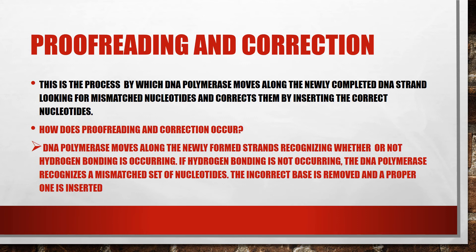The last process of DNA replication is proofreading and correction. This is the process by which DNA polymerase moves along the newly completed DNA strands, looking for mismatched nucleotides and correcting them by inserting the correct nucleotides. For example, if a nucleotide such as adenine, guanine, thymine, or cytosine is placed in the wrong position, DNA polymerase detects it and inserts the correct base.